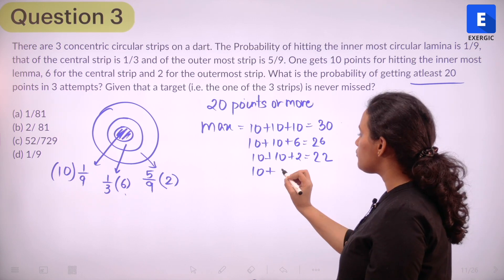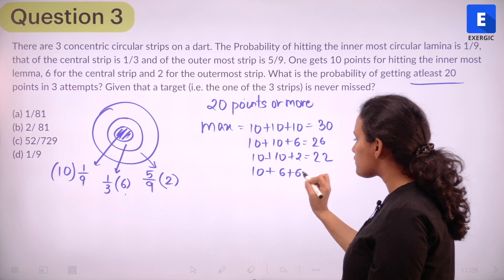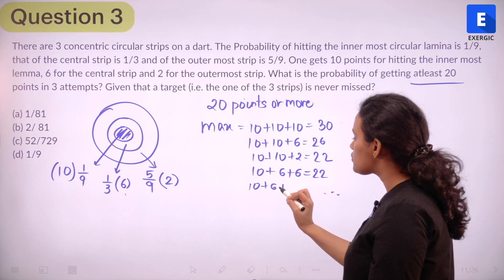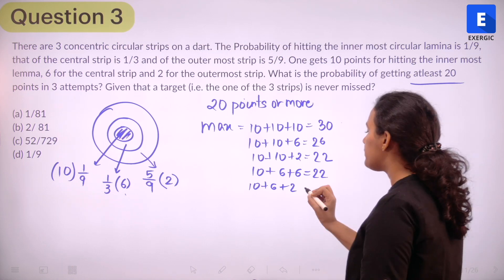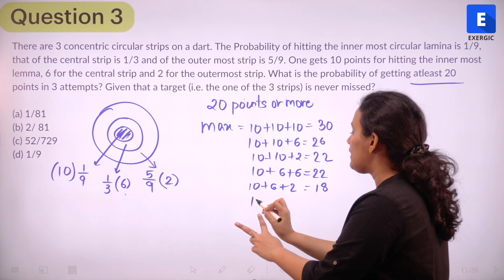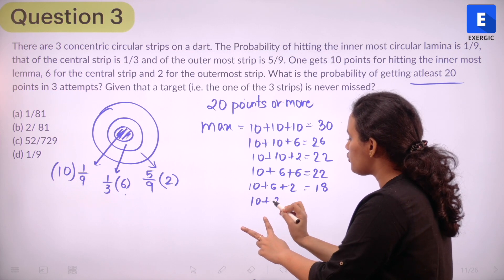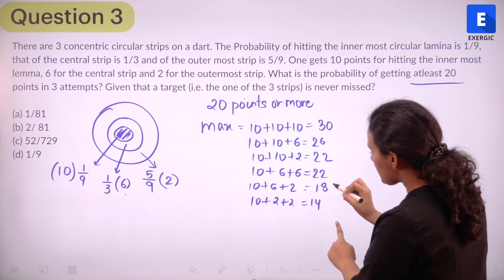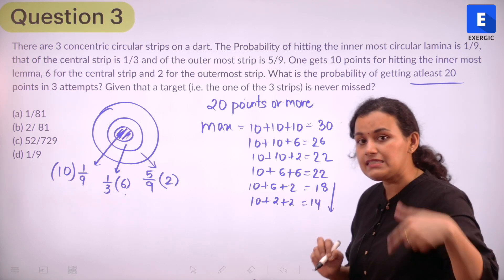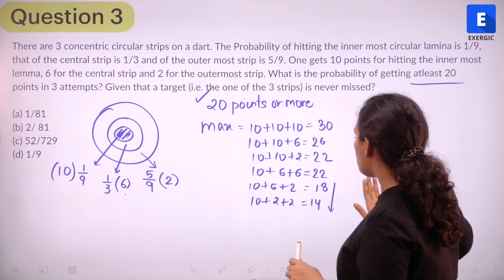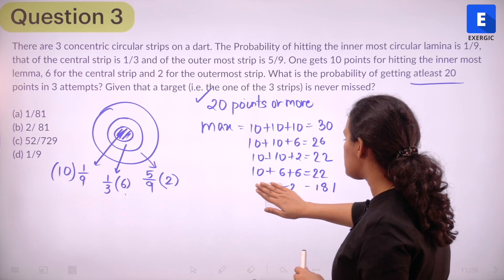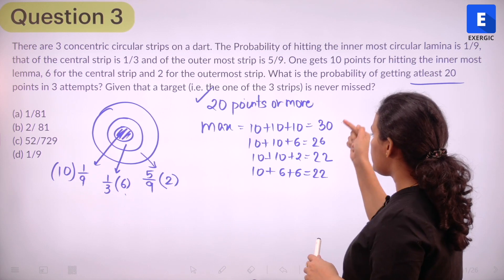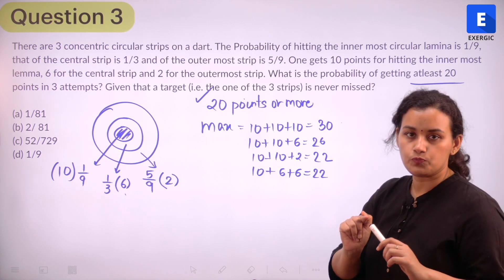So we start with the maximum and then we are going in the decreasing manner. So 10, 10 is all over. So we move to 10 plus 6 plus 6, which is again going to be 22. And then we have 10 plus 6 plus 2, which is going to be 18. And if I go further down, it is going to be 10 plus 10 plus 2 that is going to be 14. Notice we are getting values that are less than 20 now, but we want 20 points or more. So these values will not be considered. And the only possibilities are 30, 26, 22 and 22.